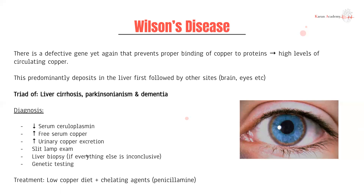If everything else is inconclusive, you can do a liver biopsy and follow up with genetic testing for reproductive purposes. You also have higher levels of copper excretion, assessable through a 24-hour urine collection. Treatment is a low copper diet — avoiding things like nuts, meat, shellfish, and seafood — and starting the patient on chelating agents like penicillamine, which binds to copper to help excrete it.